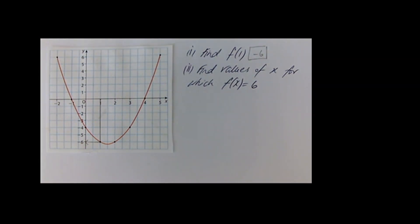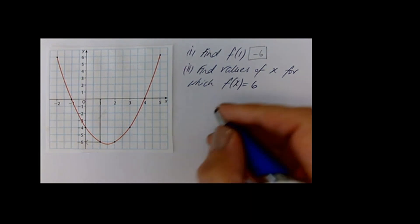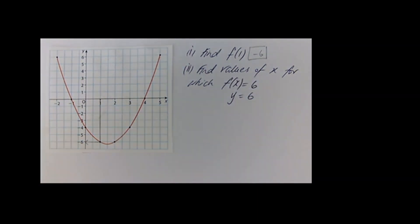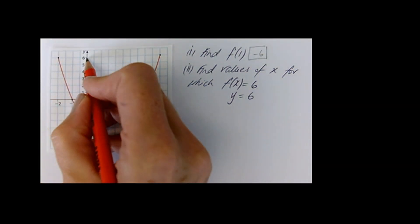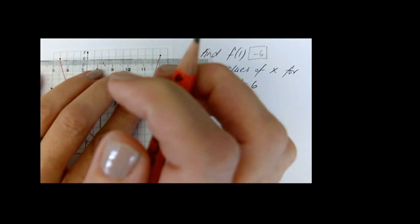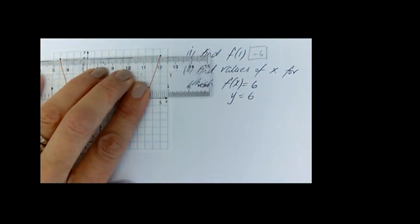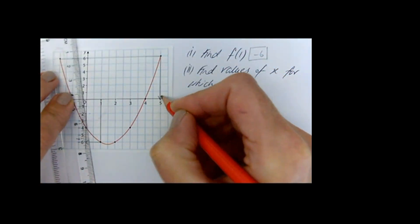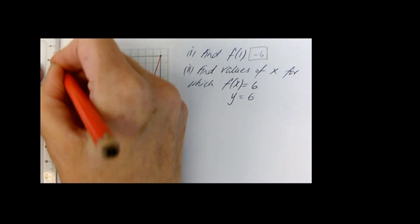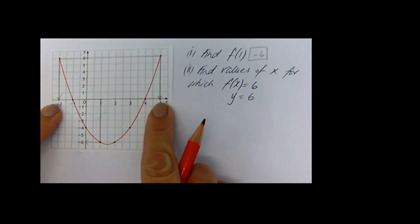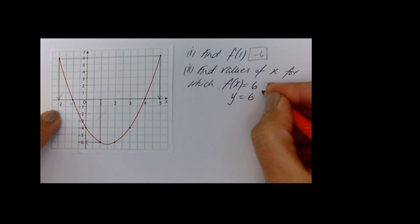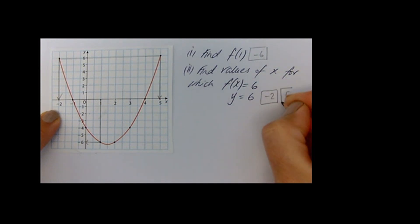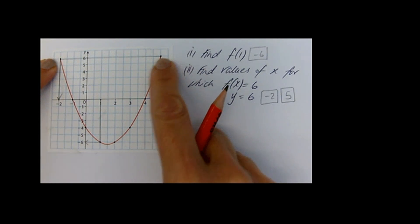Next question: find values of x for which f of x is equal to 6. Remember, that's the same as y is equal to 6, so we're going to the y axis at 6 and drawing a horizontal line. At 6, wherever that meets the curve — it's meeting in two places — you're going to read off the x axis. We're getting two values: minus 2 and 5. Those are the values of x for which f of x is equal to 6.